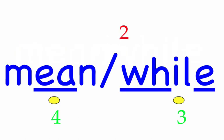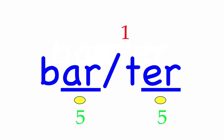Barter. I will barter for a trade. First syllable: bar, two sounds, B-R. Second syllable: ter, two sounds, T-ur. Barter — mark the word.